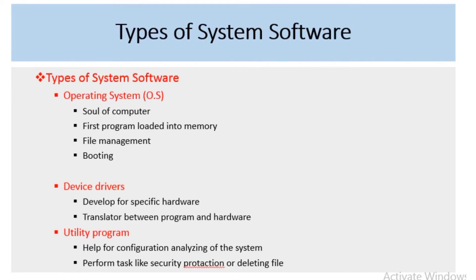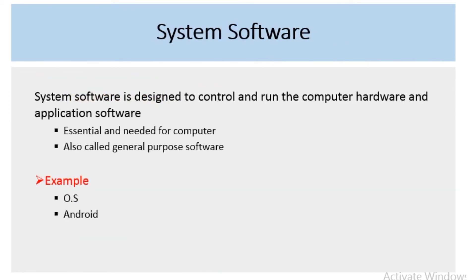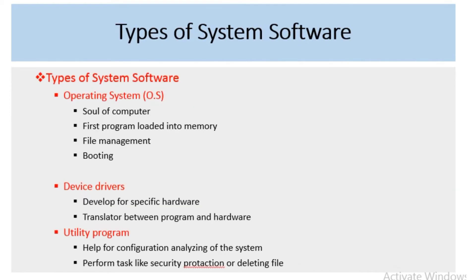Now we look at the types of system software. System software is further categorized into 3 main categories: Operating System, Device Driver, and Utility Program.